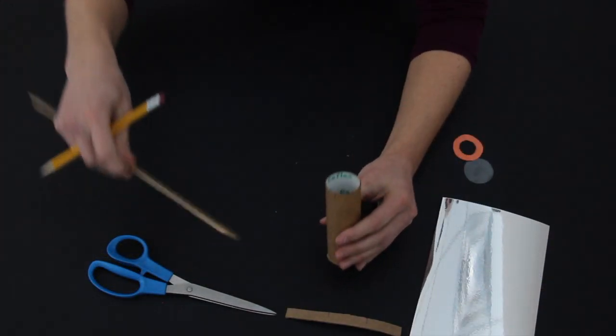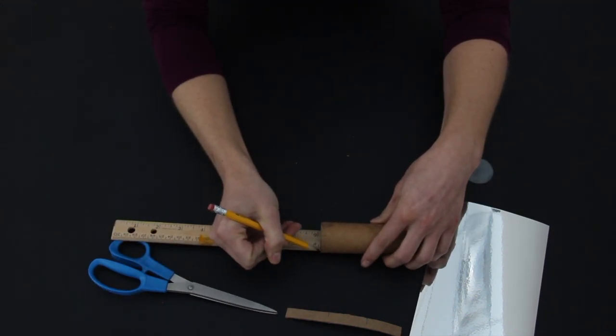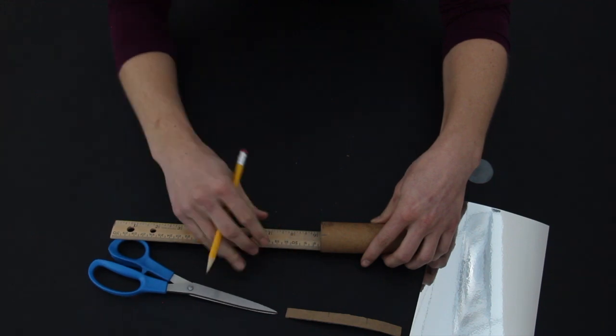Insert a ruler inside end B until it touches the cardboard ring at the other end. Measure this distance. This will be the length of each of our kaleidoscope mirrors.